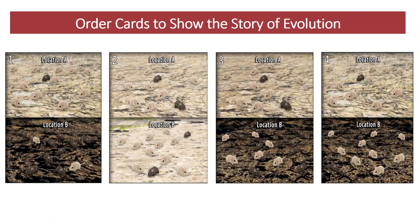Right now the four cards are not in the correct order — this is where you come in. Your job is to order the four cards to reflect how the population of rock pocket mice evolved over time, putting them in order from oldest to most recent. The first card should reflect the farthest back in time, with the last card reflecting the most recent. You know a lot about natural selection, so draw on that knowledge as you try to order the cards.